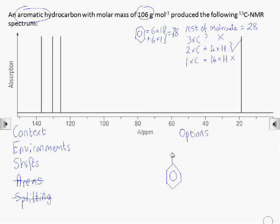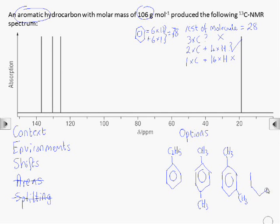So we could have a benzene ring with an ethyl group connected to it. We could have a benzene ring with a methyl group, and then another methyl group connected in one of three different positions. So that's 1,4-dimethylbenzene, here's 1,3-dimethylbenzene, and we could have 1,2-dimethylbenzene.